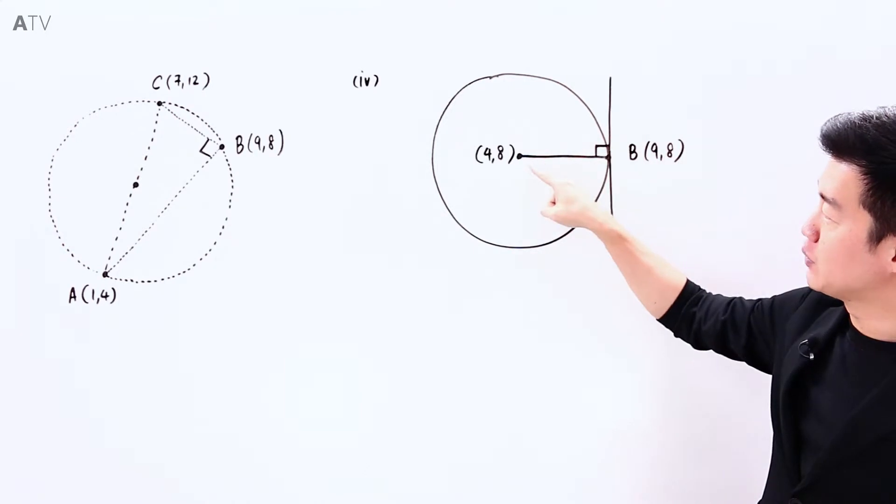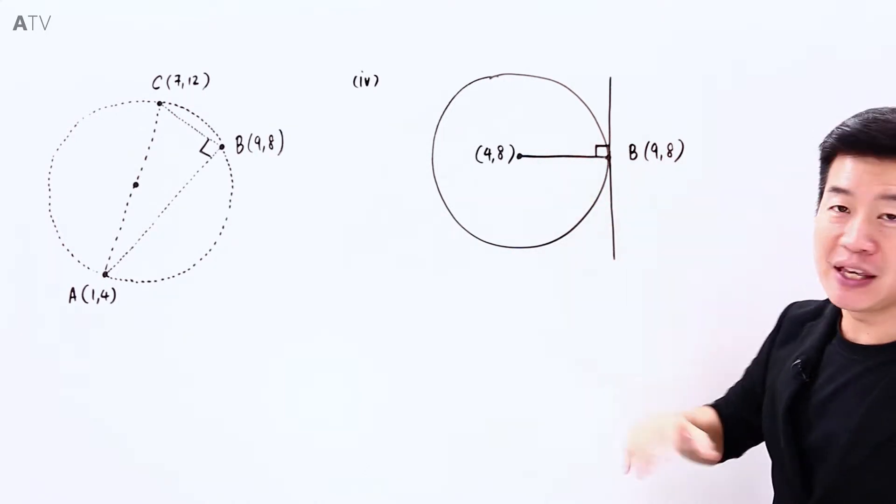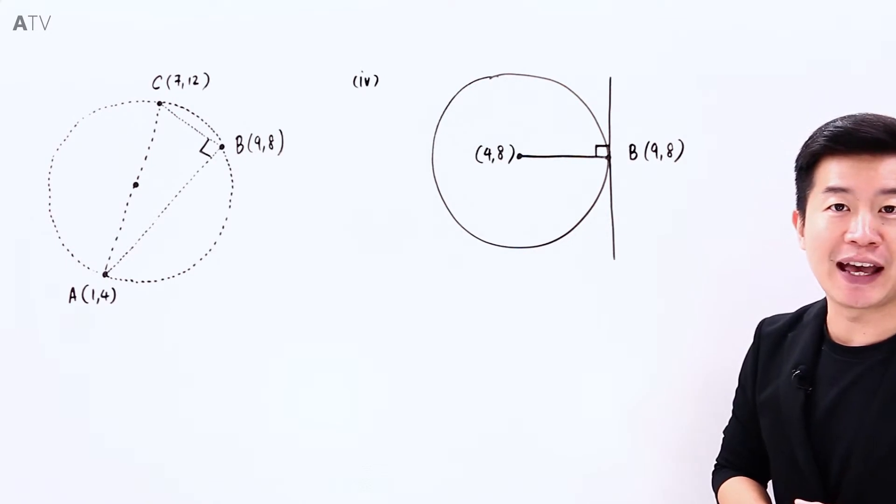Which means that this line here, the radius from the center to the point B, it must be horizontal, it must be parallel to the x-axis.